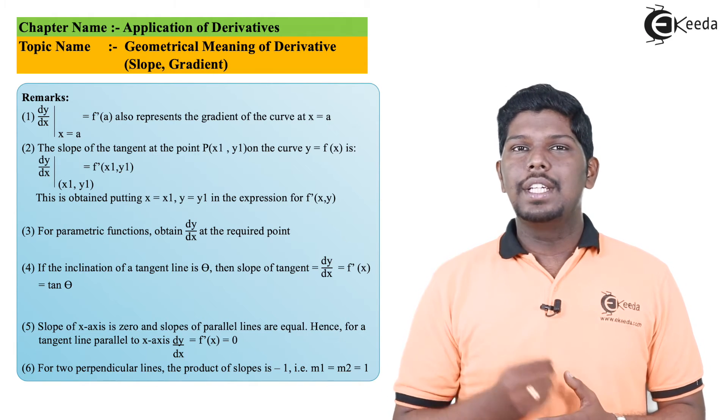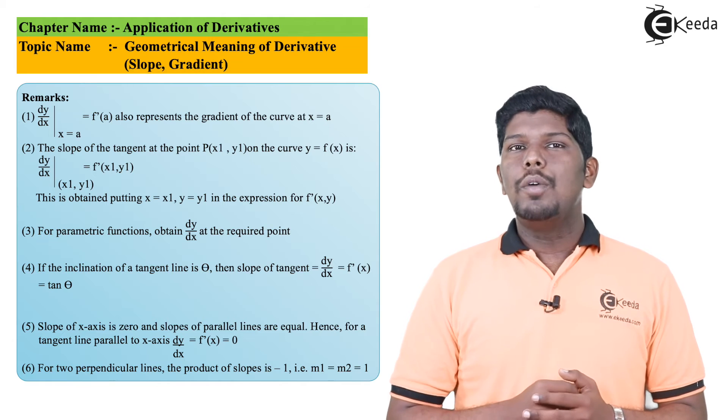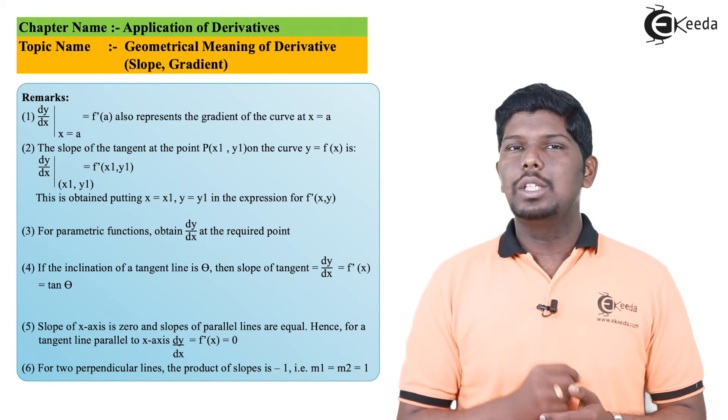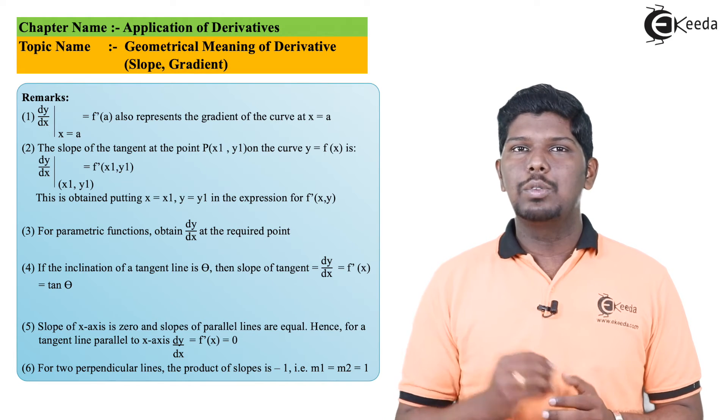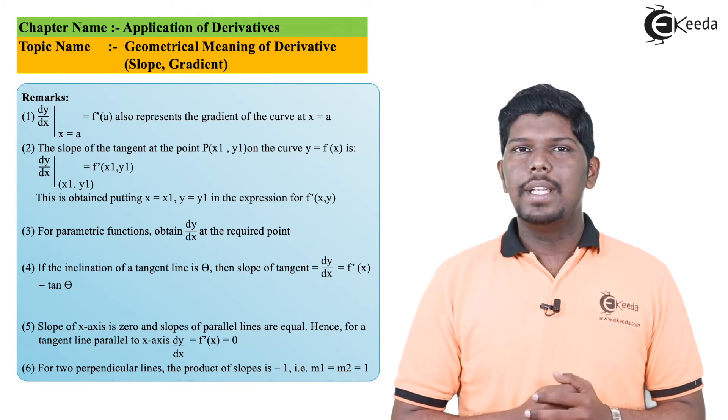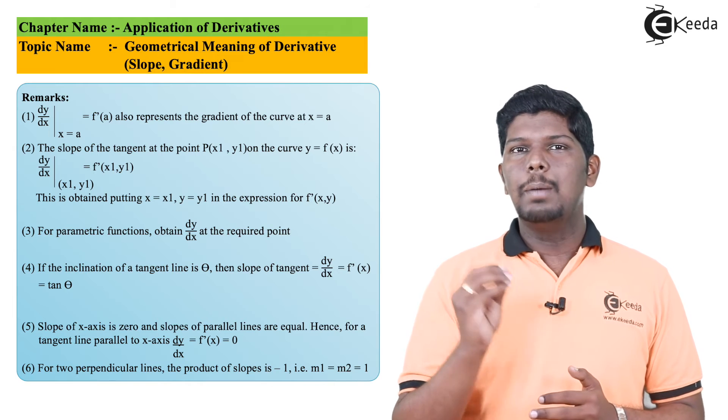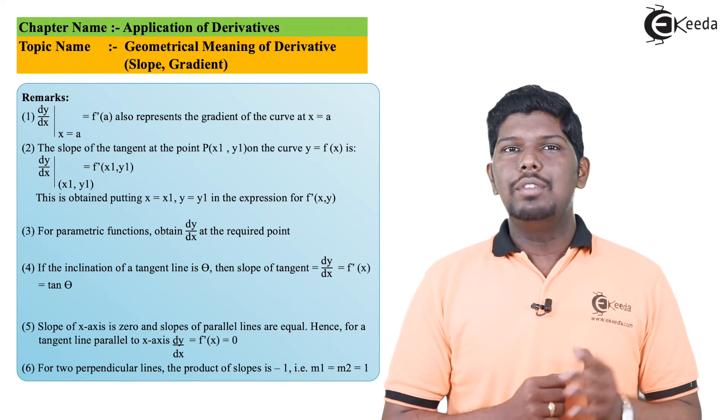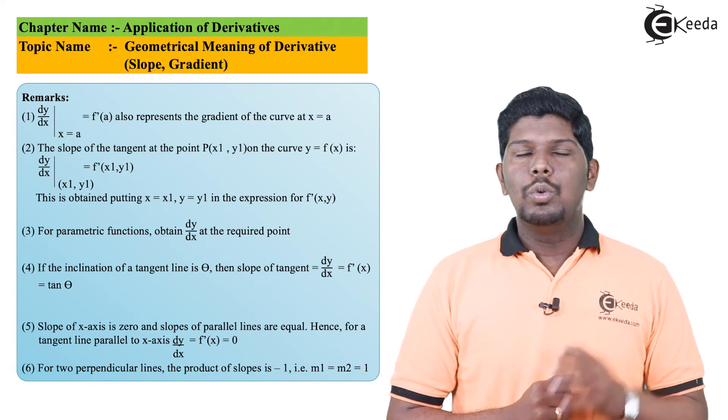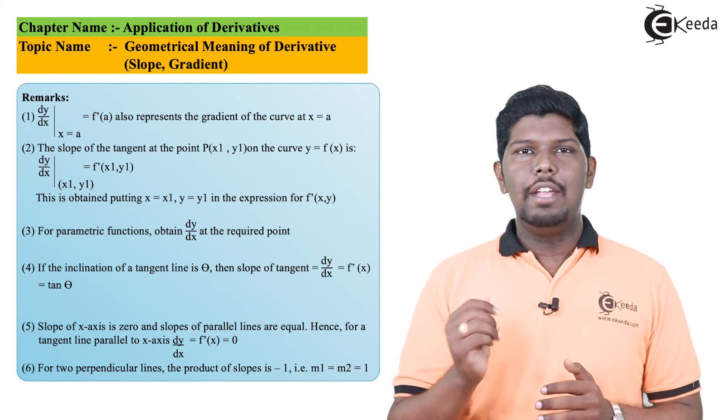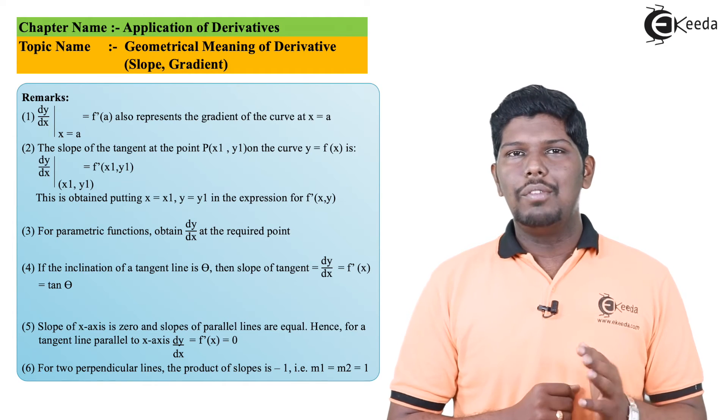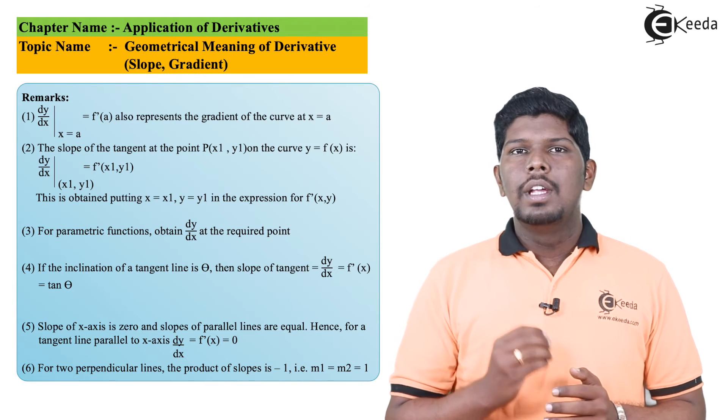The slope of a tangent at any point, say (x1, y1), that is dy/dx at (x1, y1), will give you f'(x1, y1). So this will also represent the slope of tangent at a particular point (x1, y1) on that curve. Now in the earlier chapter we have seen parametric functions, so we need to find first dx/dt and dy/dt, but in that case also you need to find dy/dx, and after that only you can find slope of tangent.